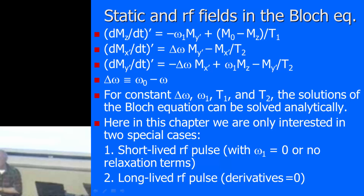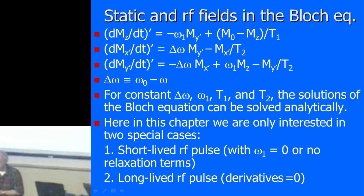Any questions for this chapter? A student asks: suppose we have two tissues with T1 of tissue 1 greater than T1 of tissue 2 — does that mean T2 of tissue 1 is also greater than T2 of tissue 2, or is there no such relationship?